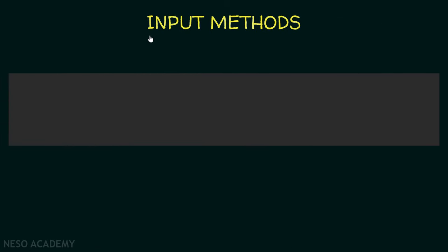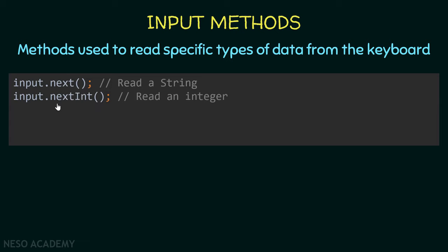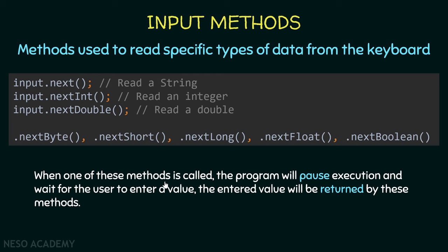To read data we use input methods, which are methods used to read specific types of data from the keyboard. For example, using our scanner object and the dot operator, we can call next() which reads a String, nextInt() which reads an integer, nextDouble() which reads a double, and we also have nextByte(), nextShort(), nextLong(), nextFloat(), and nextBoolean().